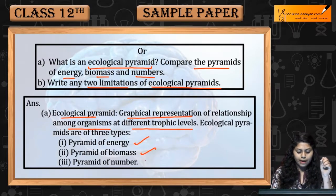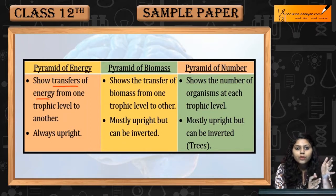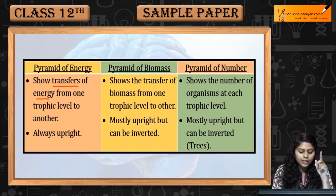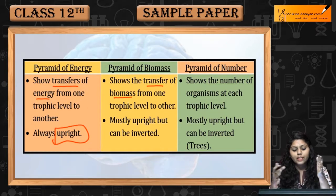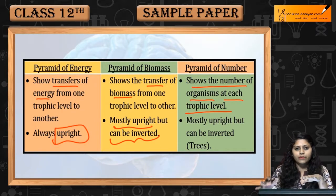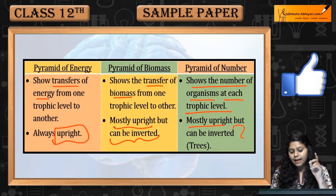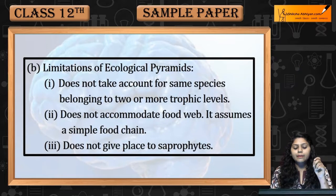Pyramid of energy show karti hai transfer of energy from one trophic level to another — it is always upright. Biomass pyramid transfer karti hai biomass from one trophic level to another — mostly upright but can be inverted also. Number pyramid show karta hai organisms at each trophic level — mostly upright, but can be inverted, for example in case of trees.